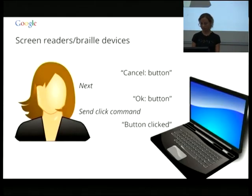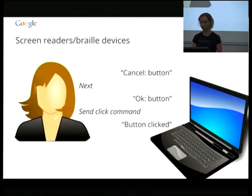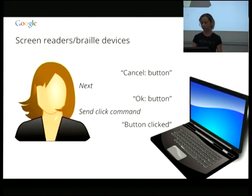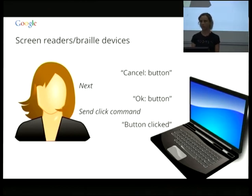Screen reader users on a computer will use the keyboard with a series of fairly sophisticated keyboard commands — kind of like using Vi or Emacs, getting really good at key combinations. In this example, the screen reader speaks that the user is currently focused on a button labelled 'cancel,' saying 'cancel button.' The user moves to the next thing — 'OK button' — and then clicks it, getting confirmation it was successfully clicked. The reason it says 'button' is that to a sighted user it's visually obvious, but to a screen reader user this needs to be explicit. You need to be explicit about what role things are playing.